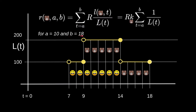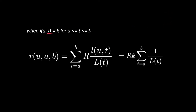Between t equals 10 and t equals 18, LUT for Bob is a constant, so we can pull out LUT to the left and the equation simplifies. In general, when LUT is equal to some constant for the time interval between A and B, this equation can be simplified to this.